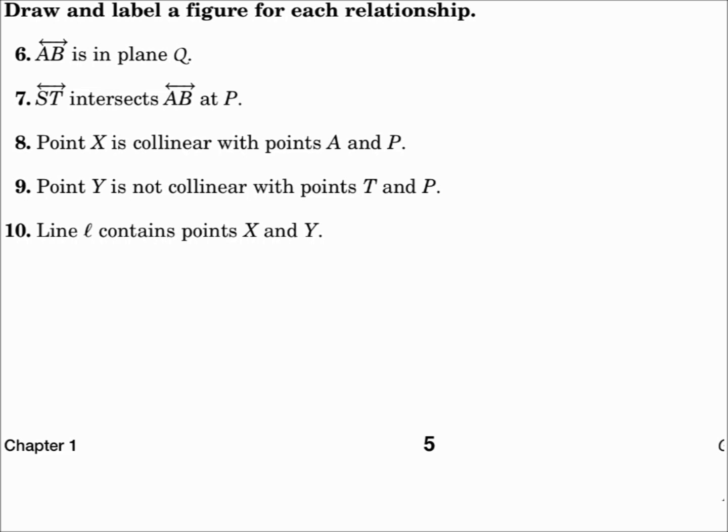Number 10. Line L contains points X and Y. Well, we have a line and two points. Draw the biggest thing first. That's the line. It's line L. We'll draw L over to the side. And points X and Y are on the line. Draw a lowercase cursive L for the L so you don't confuse it with a 1.